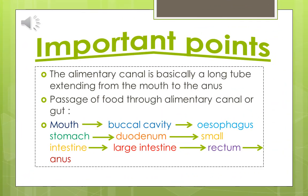To recap: the gut is basically a long tube extending from mouth to anus. The passage of food through the gut goes: mouth and buccal cavity, esophagus, stomach, duodenum, small intestine, large intestine, rectum, and finally anus.